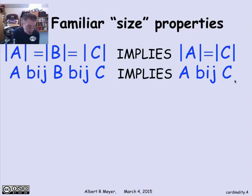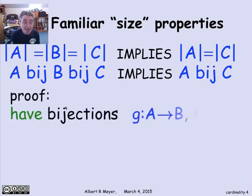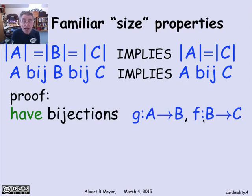Well, how do you prove that? Well, it's true. And here's how. By definition, since A Byge B, that means that you have a bijection G from A to B. And since B Byge C, you have a bijection F from B to C.